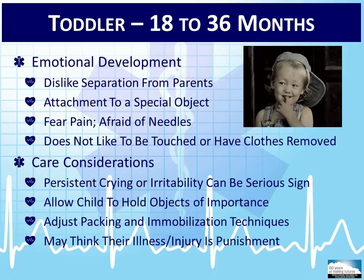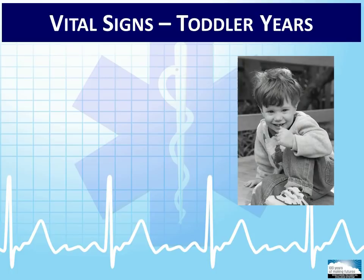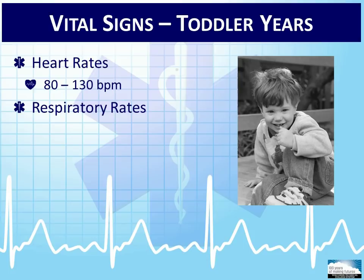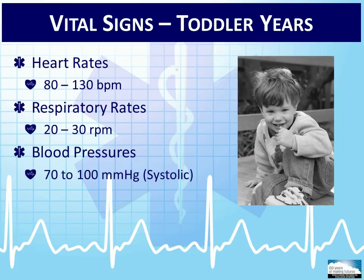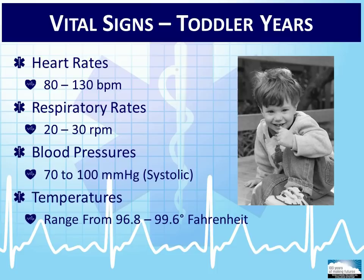Typical vital signs during the toddler years are as follows: heart rates range from 80 to 130 beats per minute, respiratory rates range from 20 to 30 respirations per minute, systolic blood pressures range from 70 to 100 millimeters of mercury, and temperatures range from 96.8 to 99.6 degrees Fahrenheit.